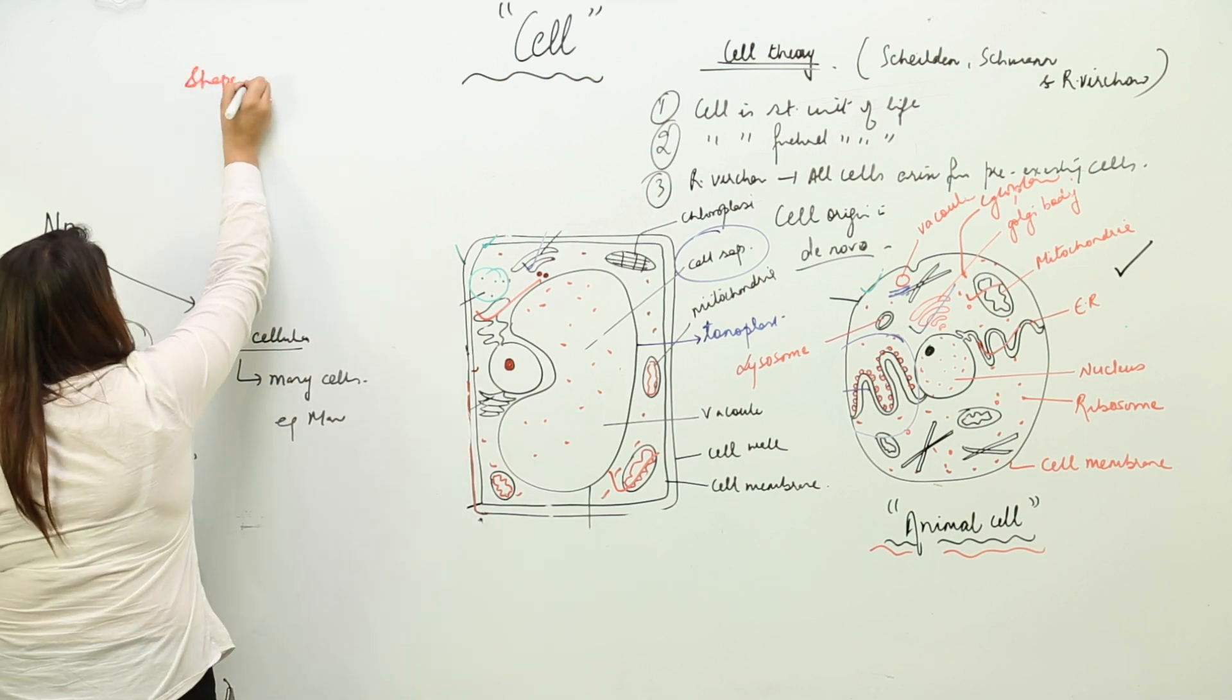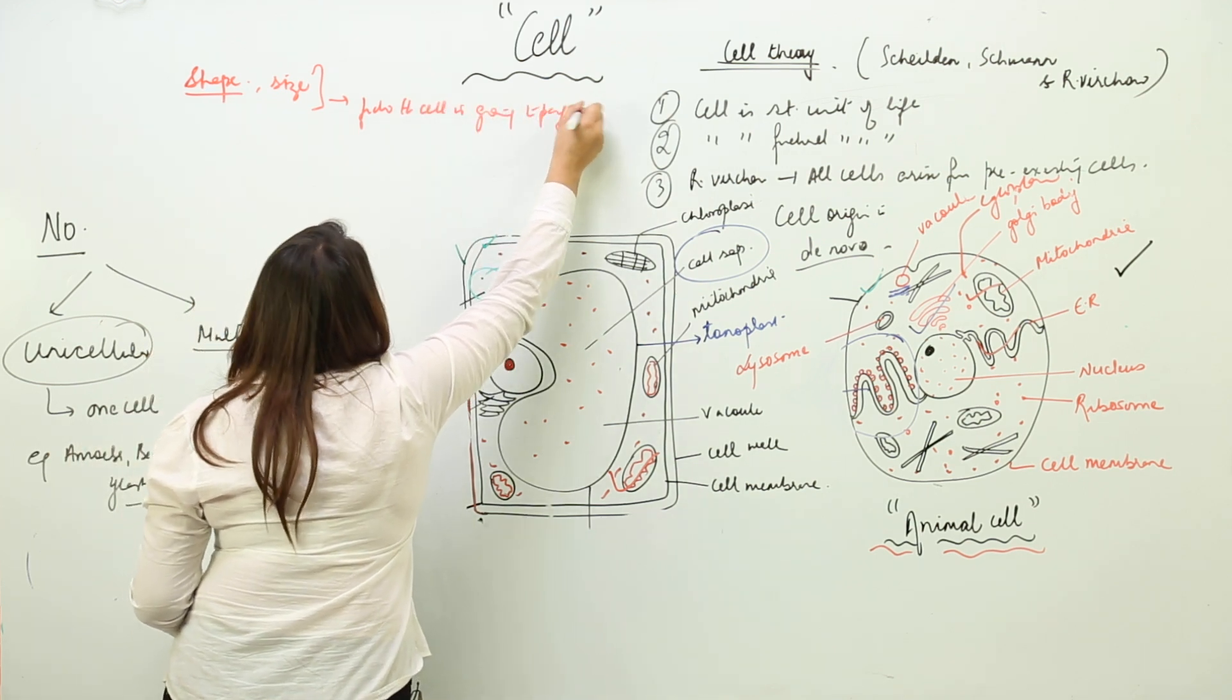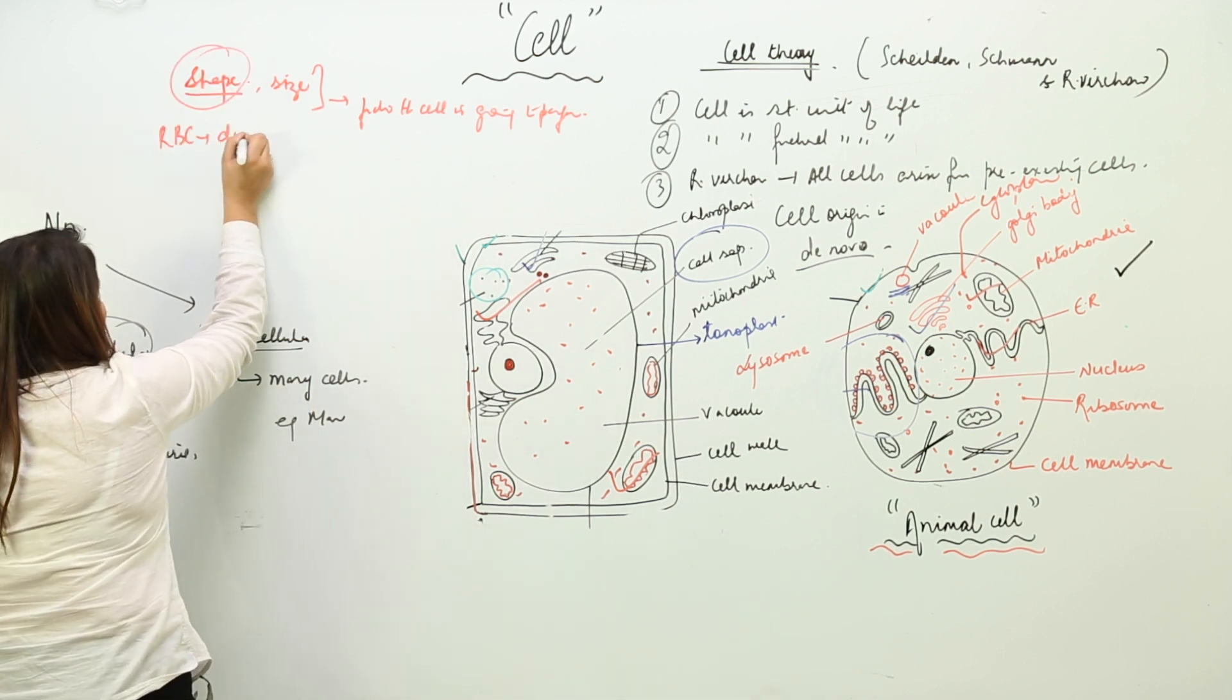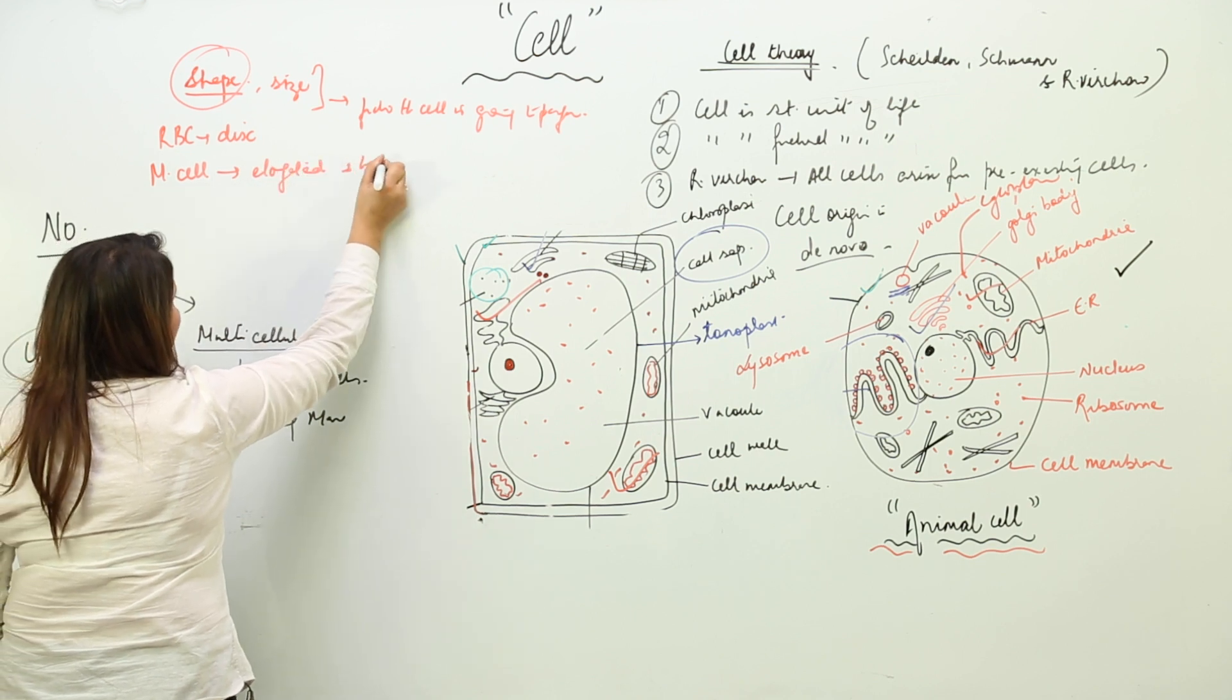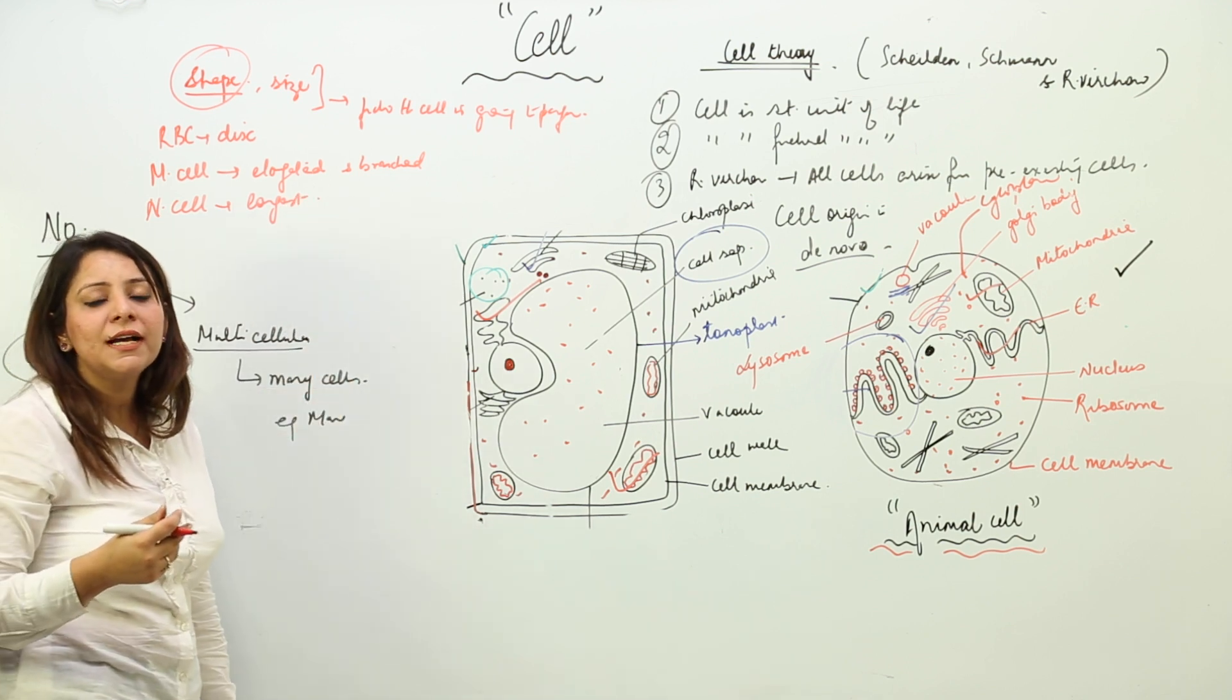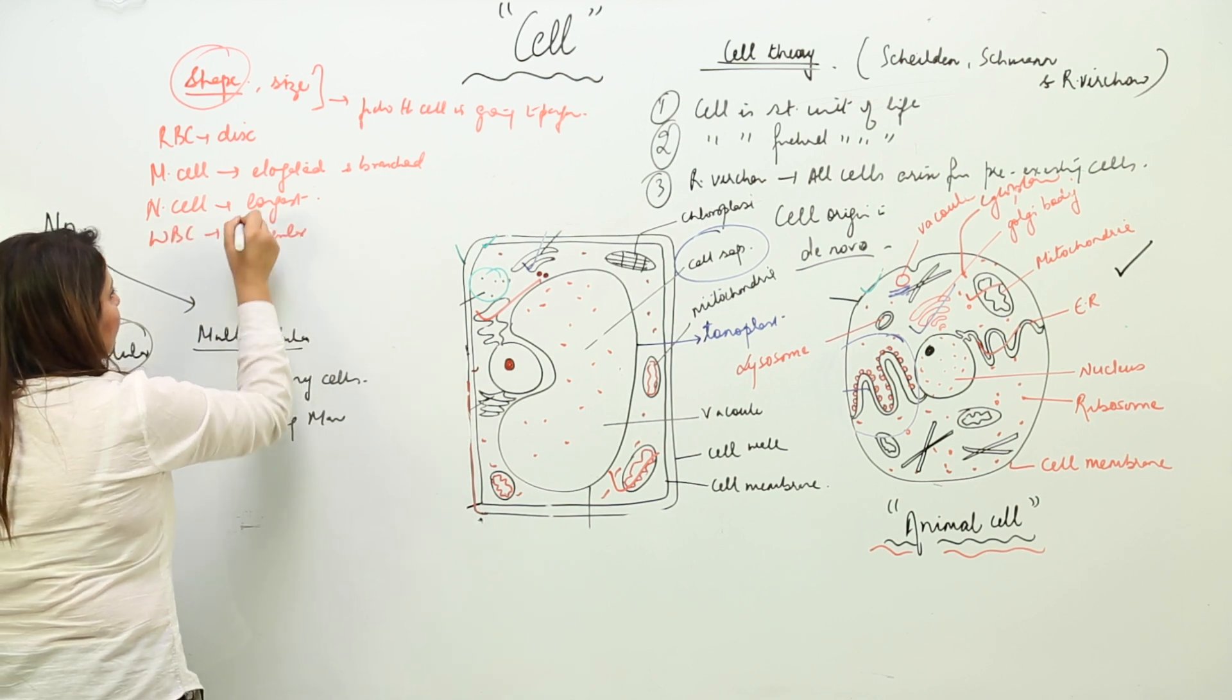As far as the shape and size is concerned, it depends upon the function the cell is going to perform. Depending upon that, we have different shapes like RBC has a disc shape. We have muscle cell which is elongated and branched because they have a property of contracting and relaxing. Likewise, we have nerve cell which is longest or very long because it needs to transmit impulses from one part of the body to another.